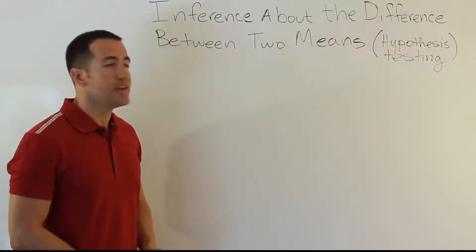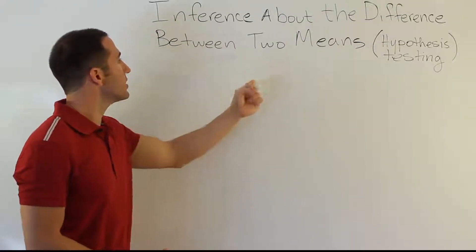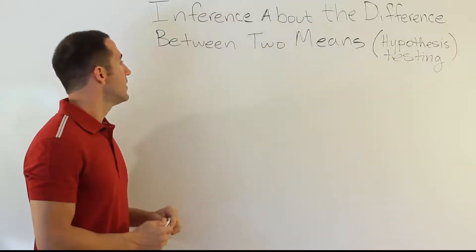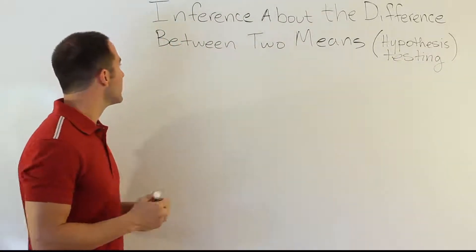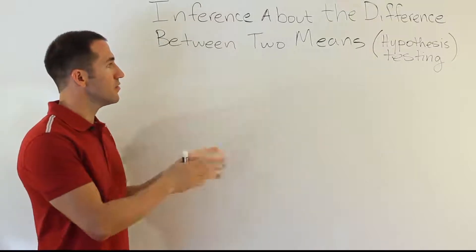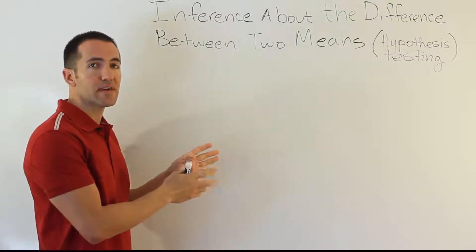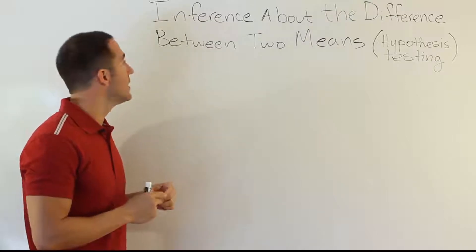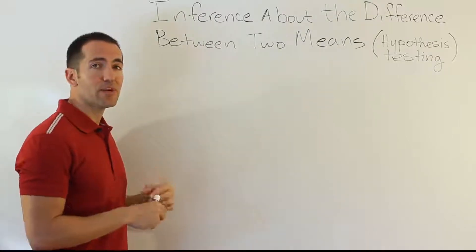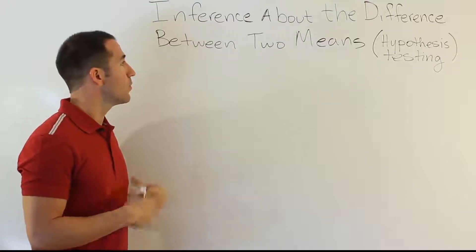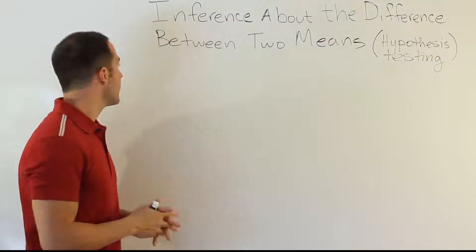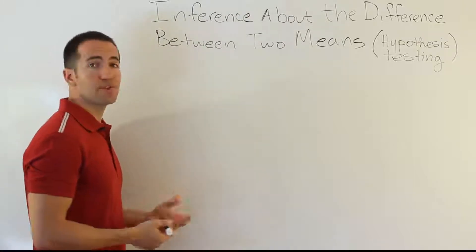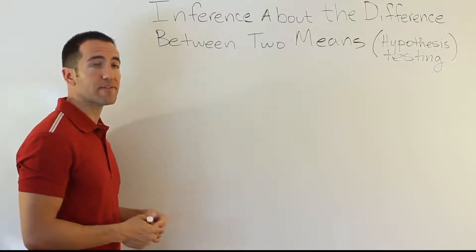Alright, so this video we're looking at the inference procedure to compare two population means using hypothesis testing. What we want to talk about here is what's the difference between this new method of hypothesis testing and the procedures that we learned before when we're only looking at one population. Here we're comparing two population means. In the past, we're looking at just one population mean. What's different about the procedure? Well, let's talk about mainly what's similar so that we realize that we don't have to change too much to be able to accomplish this hypothesis testing procedure.